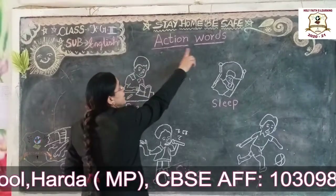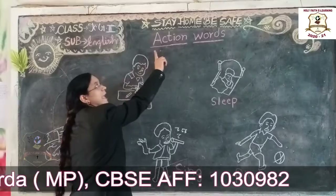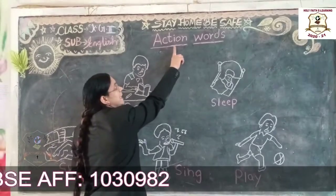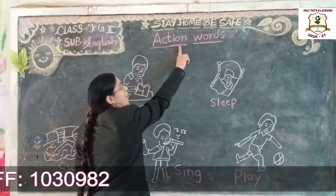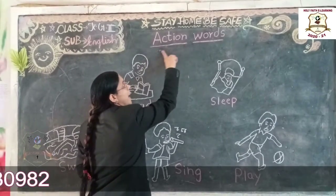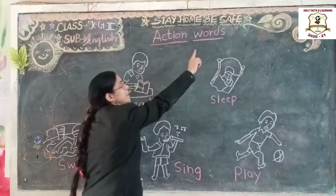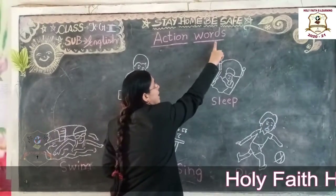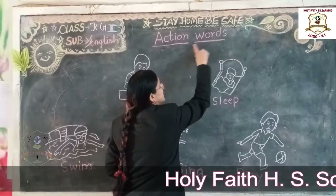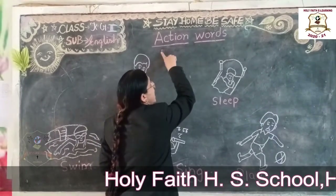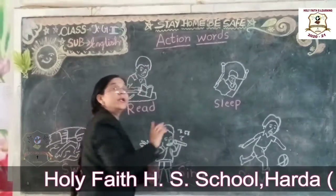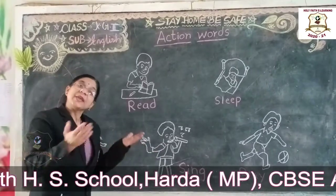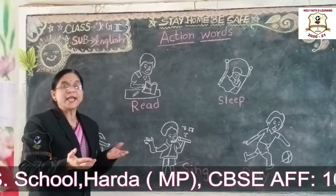Now start action words. A, C, T, I, O, N — Action. W, O, R, D, S — Words. Action words. The actions that we are doing — these are action words.